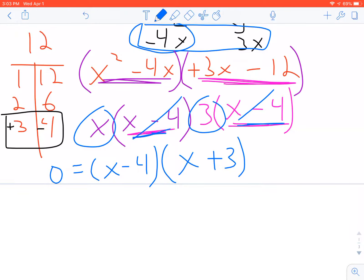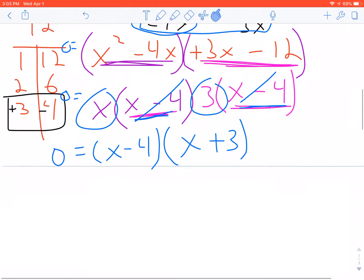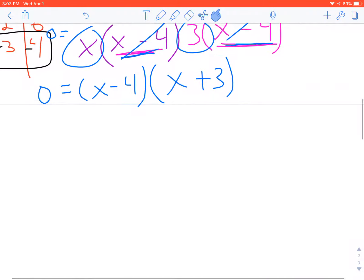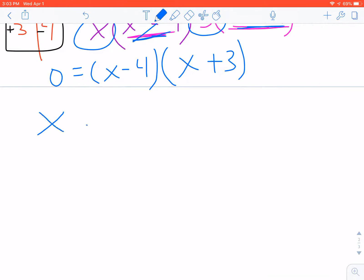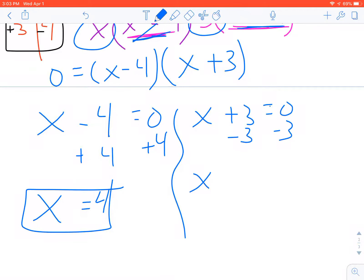Now that equals 0 was there the whole time and I kind of ignored it until the last step. So now I need to say x-4 is equal to 0 and x+3 is equal to 0. I'm going to solve each one of these for x. Add 4 to both sides, x is 4. Minus 3 from both sides, x is a minus 3.